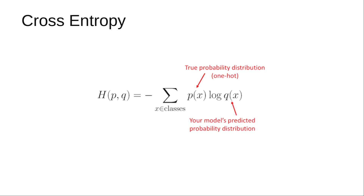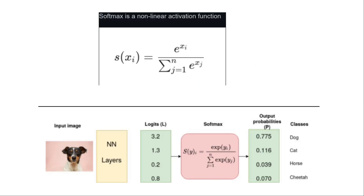On the other hand, the estimated distribution — the output of a model q — generally contains some uncertainty, so the probability of any class in q will be between zero and one. By training a deep learning system to minimize cross entropy, we are telling the system to make the estimated distribution as close as possible to the true distribution. Therefore, the class your model thinks is most likely corresponds to the highest value of q.